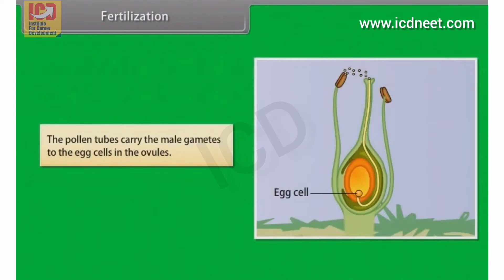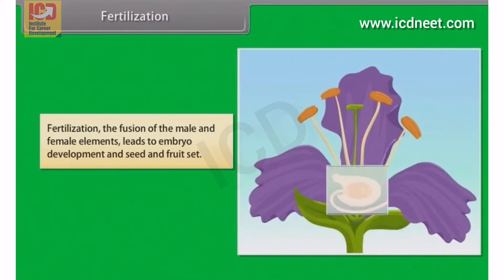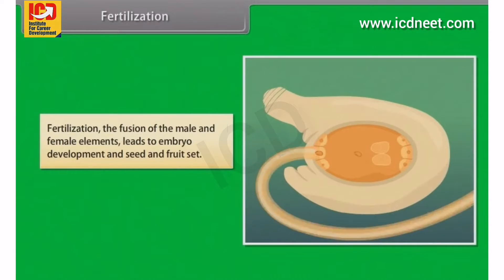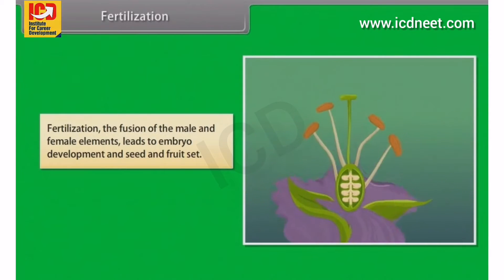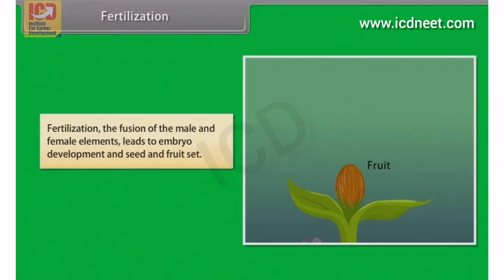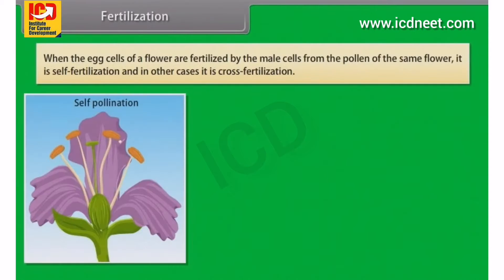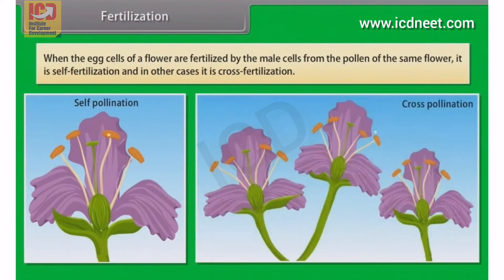The pollen tubes carry the male gametes to the egg cells in the ovules. Fertilization is the fusion of the male and female elements, which leads to embryo development and seed and fruit set. When the egg cells of a flower are fertilized by the male cells from a pollen of the same flower, it is self-fertilization; in other cases it is cross-fertilization.